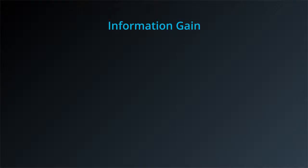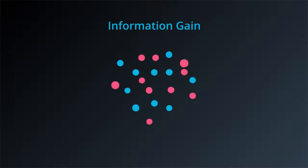Now we'll use what we know about entropy and information gain to build decision trees. Let's say we have our data in the form of these red and blue points, and we want to split it into two.